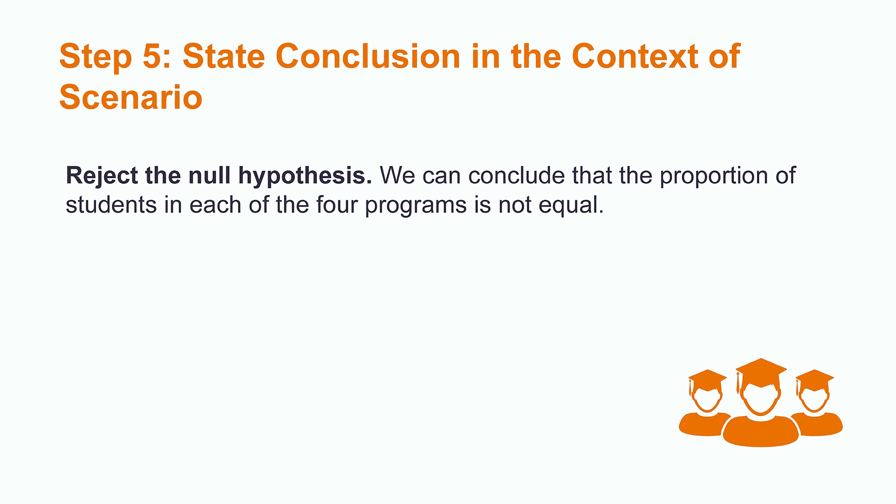Because we rejected the null hypothesis, we would phrase our conclusion as reject the null hypothesis. We can conclude that the proportion of students in each of the four programs are not equal.